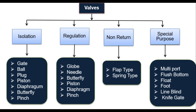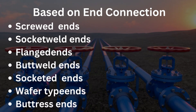Isolation type valves are used to turn on or off the flow, and include gate valve, ball valve, plug valve, piston valve, diaphragm valve, butterfly valve, etc. Valves used to regulate or control flow are classified as regulation type, including globe valve, needle valve, butterfly valve, piston valve, etc. Non-return valves prevent backflow or return flow, and are further classified into flap and spring types. There are also special purpose type valves.